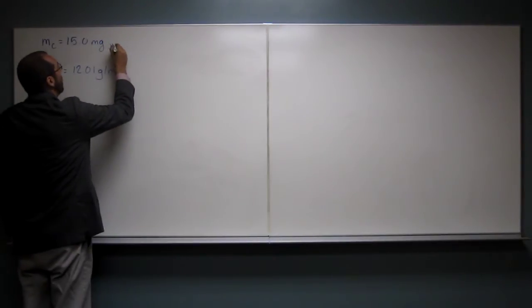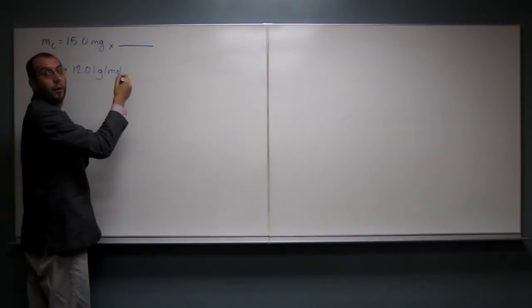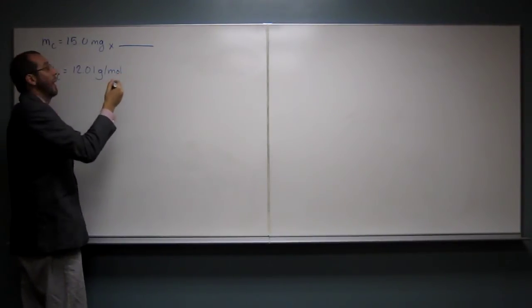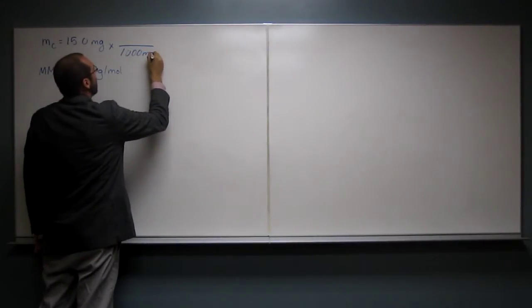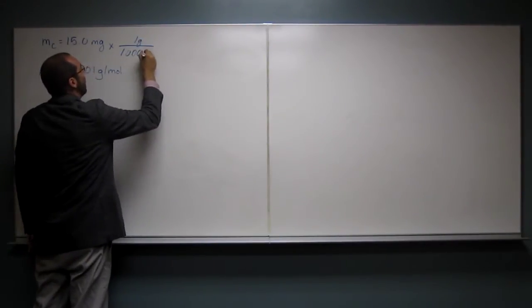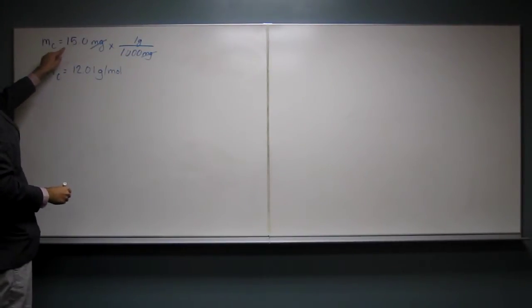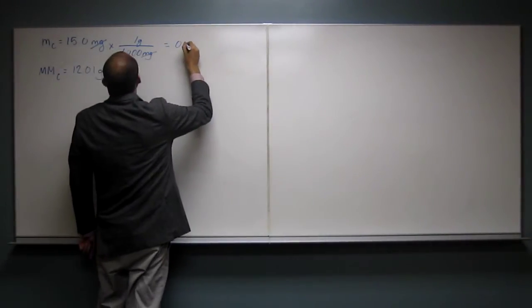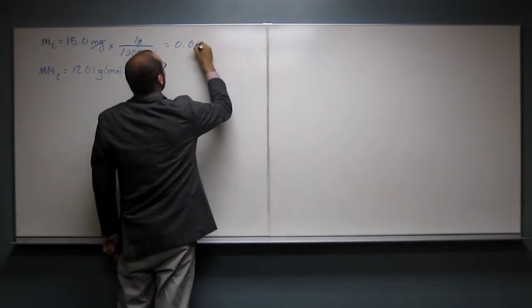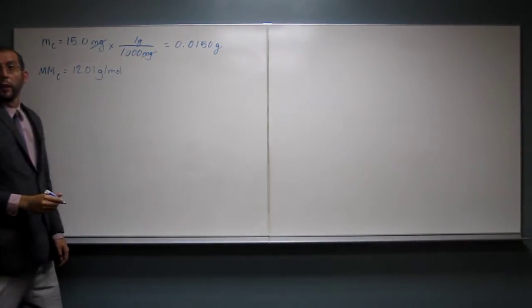So we go like this. How many milligrams are there in one gram? Do you remember? 0.01. By 1,000 milligrams. Yeah, so the opposite, right? So 1,000 milligrams in one gram. So that cancels with that. And then we go 1, 2, 3, like that. So we've got 0.0150 grams.